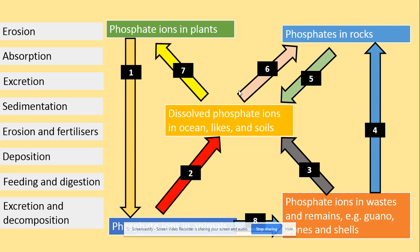We have here a diagram that illustrates the cycle of phosphate. Phosphate ions in plants can be fed on and digested, so the phosphate ions will then be present in animals. Those phosphate ions from the animals will then be extracted.